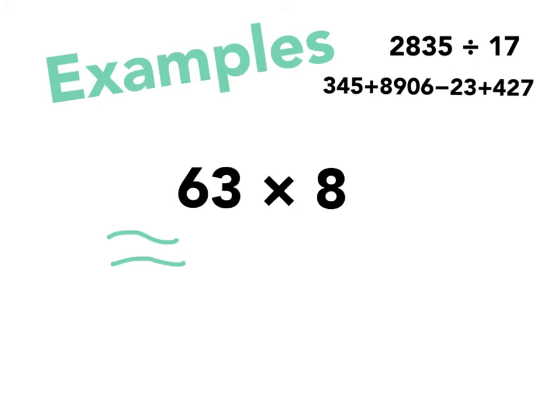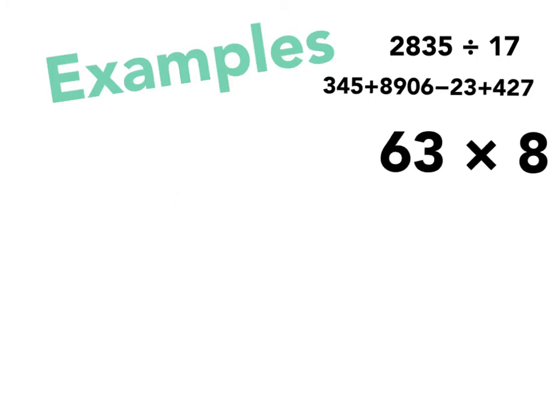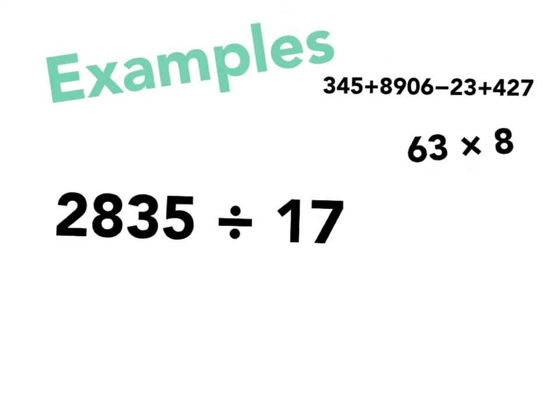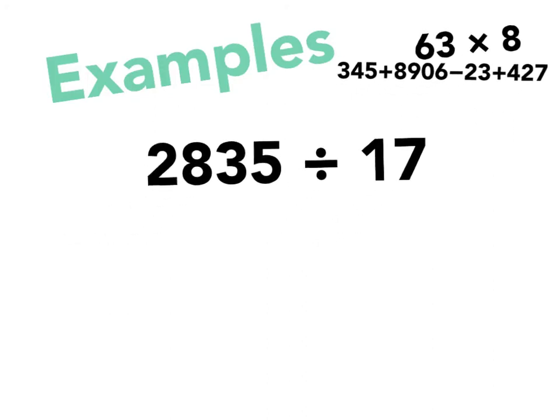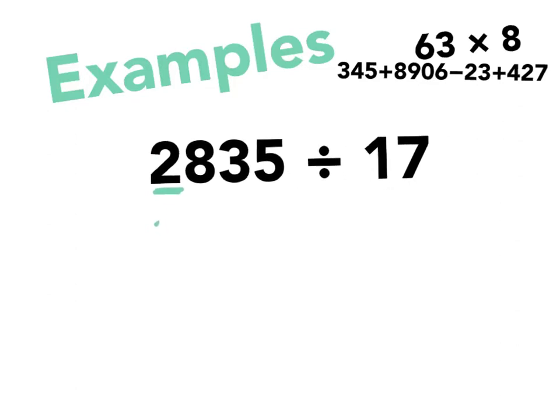Okay, next example. Let's try this one: 2835 divided by 17. That's a little harder. So what do I do? I round to the first place value, the next significant figure. 2835 rounds up to 3000, and 17 rounds up to 20.